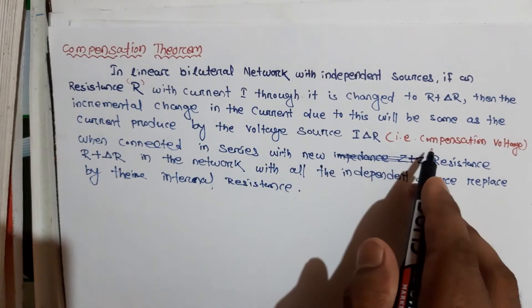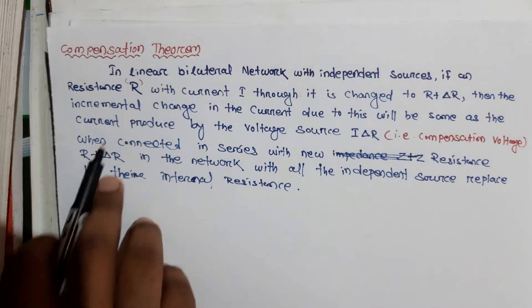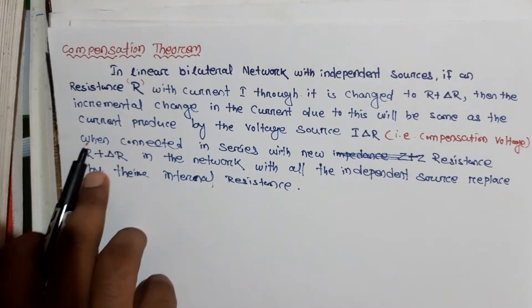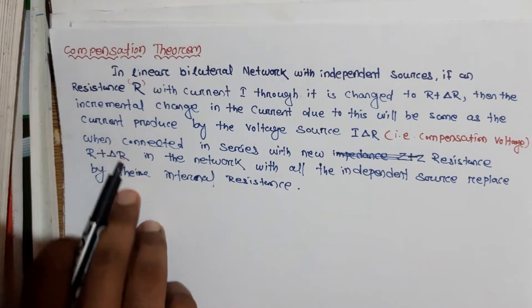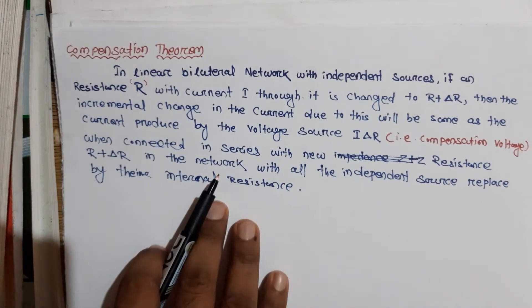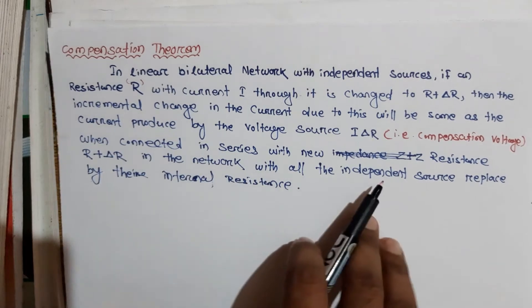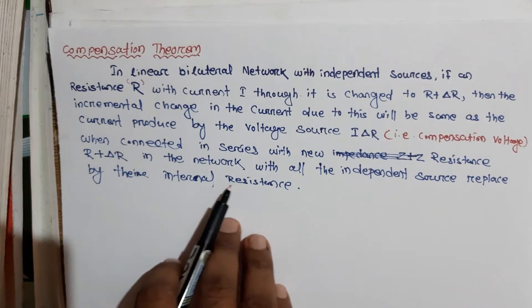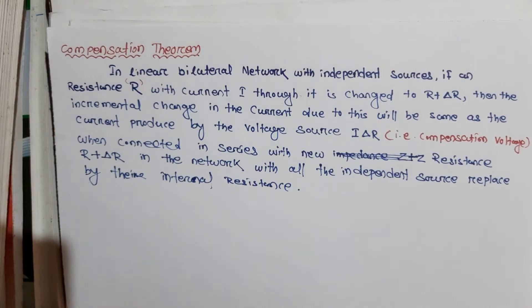This voltage source I times delta-R is also known as the compensation voltage. It is connected in series with the new resistance R plus delta-R, while all the independent sources in the network are replaced by their internal resistances — that is, we deactivate all independent sources.